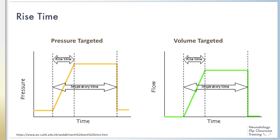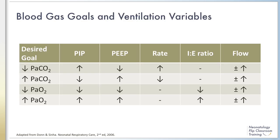You may pause the recording and study the table for generalizations of how adjustment of ventilator variables will impact the partial pressure of CO2 and oxygen in the patient. In general, PIP and rate control the CO2 levels, whereas PEEP, FiO2, and the I to E ratio have a larger impact on oxygen levels. This concludes Module 2. Thank you for your attention.